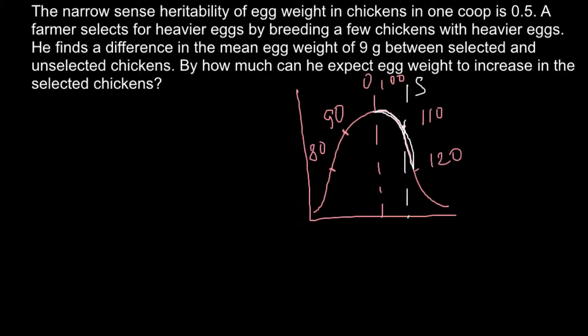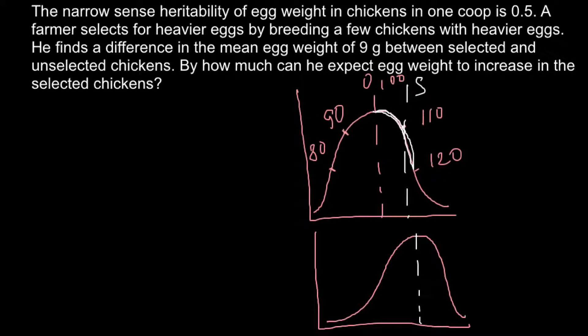Now we have to predict what we are going to get in the following, or F1, generation. If you think the new distribution would simply shift entirely to the selection mean, that would be too easy — and it's not exactly what we should expect. The new mean should be somewhere between the original mean and the mean of selection. We call this the response to selection, where R stands for response to selection.